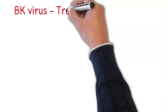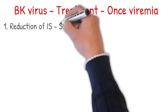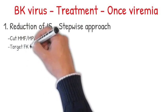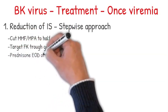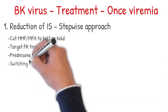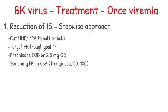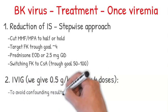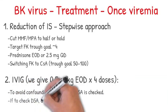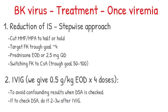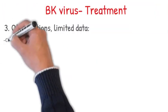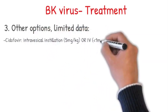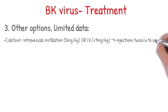Moving to treatment: once BK viremia is confirmed, you start treatment by reduction of immunosuppression — it's a stepwise approach. First, cut MMF or MPA to half or hold it. Target Prograf trough goal at 4. You might decrease prednisone to every other day or 2.5 mg daily. You might switch Prograf to cyclosporine with a target trough of 50 to 100. Some may give IVIG — we usually give 0.5 gram per kilogram every other day for four doses, and avoid a prolonged course to avoid confounding results when DSA is checked. If you check DSA, do so 2–3 weeks after IVIG. Other options with limited data include Cidofovir, which you do as intravesical installation of 5 mg/kg or IV less than 1 mg/kg, about four injections twice per week or once every 2 weeks.